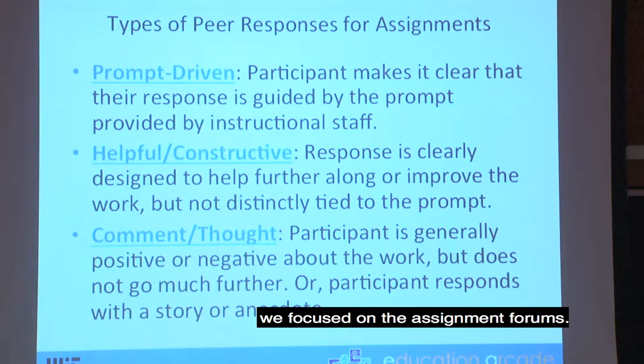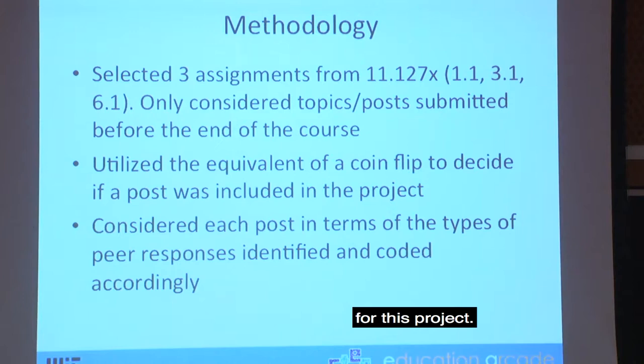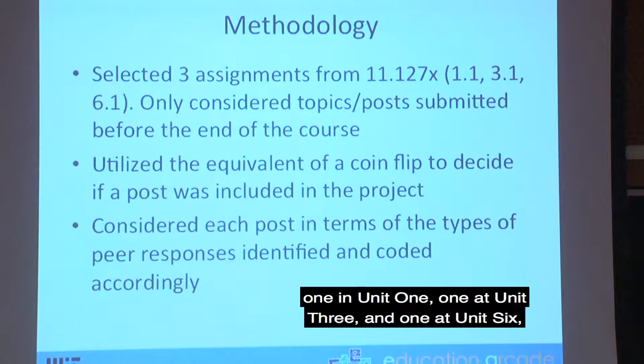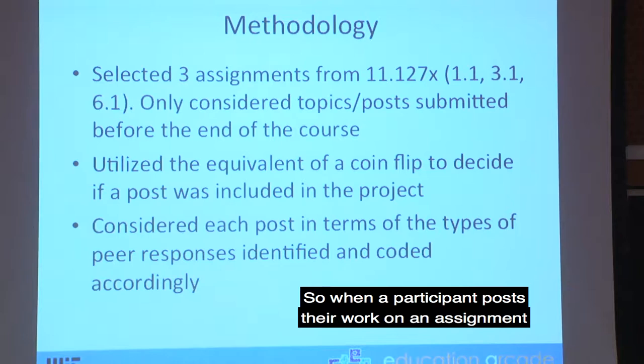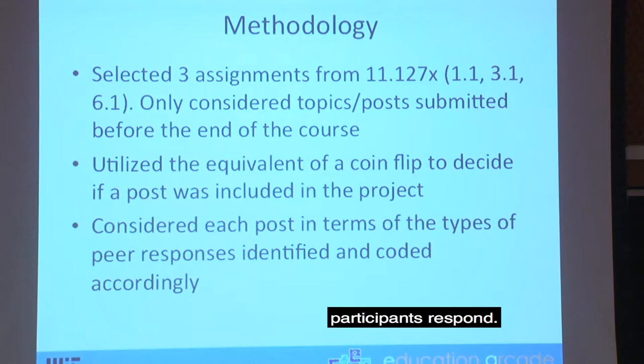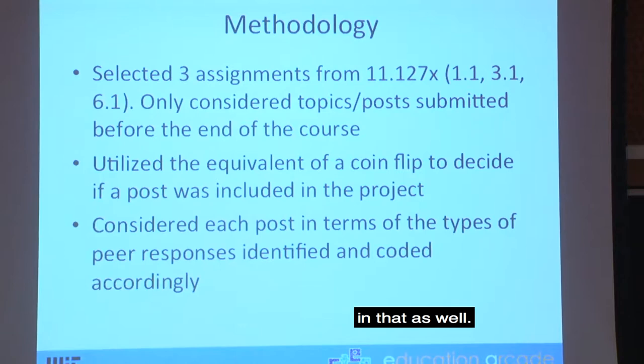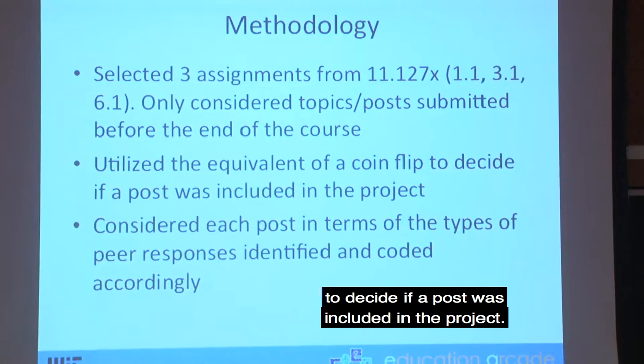For methodology, we selected three assignments from 11.127X — one in Unit 1, one at Unit 3, and one at Unit 6 — and only considered topics and posts submitted before the end of the course. When a participant posts their work on an assignment, that's a topic, and other participants responding creates the posts. We used the equivalent of a coin flip to decide if a post was included in the sample, and then we coded each included post according to the three peer response types.